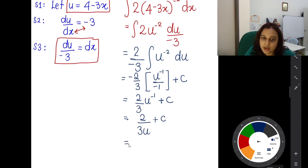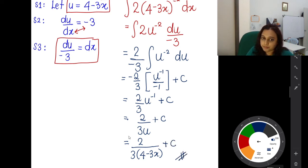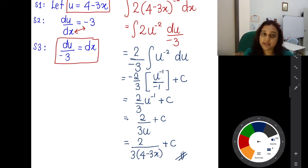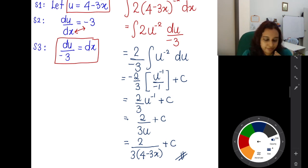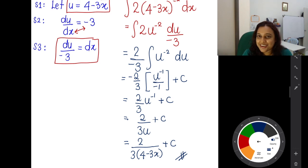Now substitute u back — don't leave it just as u. Replace u with 4 − 3x. So the final answer is 2 / (3(4 − 3x)) + C. I hope this part — integration with substitution method — is clear. If you have any questions, write them in the comment section. Subscribe, share this with another friend, and keep supporting. I'll see you in my next video for integration. Bye!